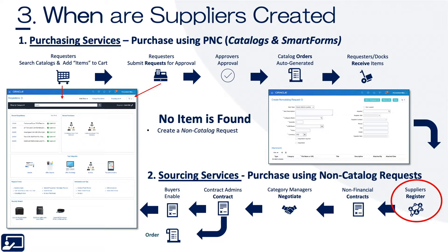Third topic: when are suppliers created? Using the procurement services overview map — when you have purchasing and you're looking for content, adding content to cart and submitting for approval, you've already negotiated your content, so you already have a supplier. It's when you don't have negotiated content that you use a non-catalog request, and the first step is usually to go out and find who that supplier is going to be.